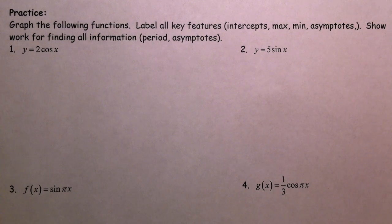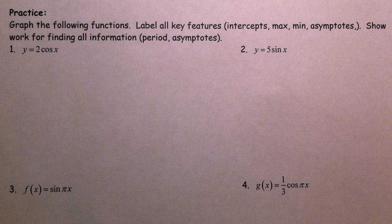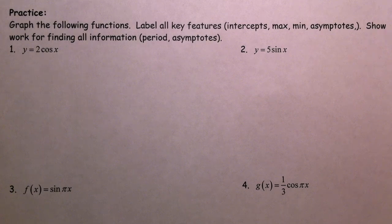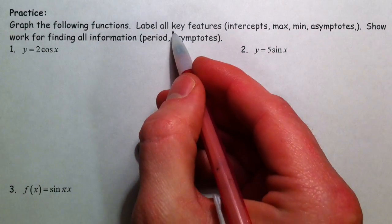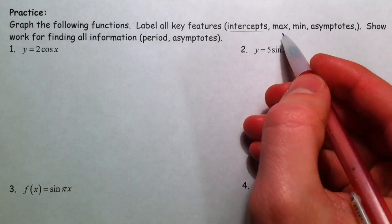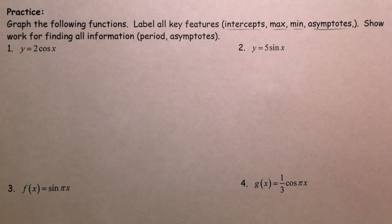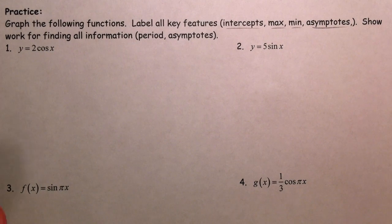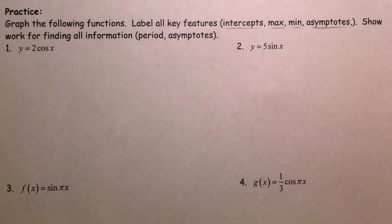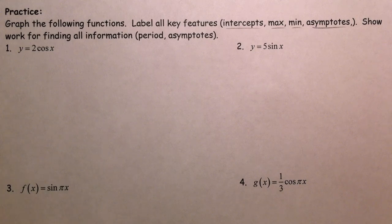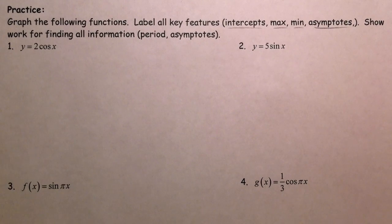Alright, so on to transforming. All we're going to be messing with is the amplitude and the period. But we're going to label all these features like intercepts, maxes, mins, and asymptotes. Basically the gist is label, get key points, know how high and how low it goes, know when it starts repeating itself, and you'll be good.